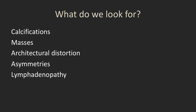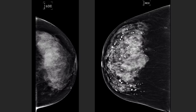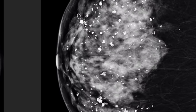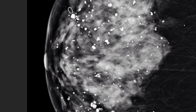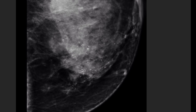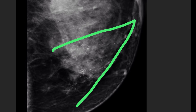The things we look for on screening mammograms are broadly: calcifications, masses, architectural distortion, asymmetries, and lymphadenopathy. Looking at calcifications — one patient has lots of round calcifications many with lucent centers, these are oil cysts which can arise spontaneously or as a response to trauma. Another patient has very different calcifications: localized into a segment of the breast following a ductal distribution, much finer, varying shapes and sizes — so-called pleomorphic — and some quite linear. These were DCIS on biopsy.